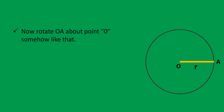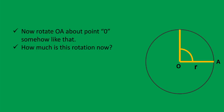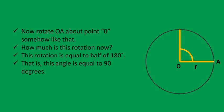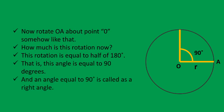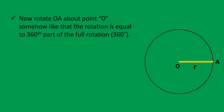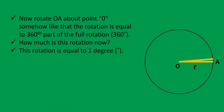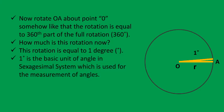Now rotate OA about point O again. This rotation is equal to half of 180 degrees — that is, 90 degrees — and an angle equal to 90 degrees is called a right angle. If we rotate OA such that the rotation equals the 360th part of the full rotation, this rotation is equal to 1 degree.